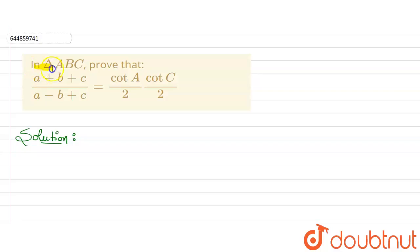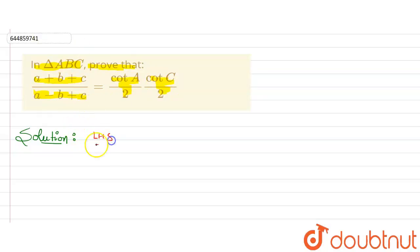In this question, it is given that in triangle ABC, prove that (a + b + c) / (a - b + c) equals cot(A/2) multiplied by cot(C/2). We will prove this using the LHS and reduce it to the RHS.